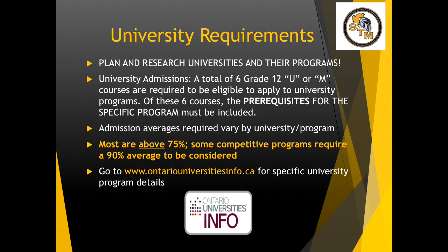Please take the time to plan and research universities and their programs. University admissions require a total of 6 Grade 12 U or M courses which make you eligible to apply. The prerequisites for the specific programs must also be included in your 6 Grade 12 U or M courses. Admission averages required for university programs vary by university and program, but most are above a 75% average. Some very competitive programs require a 90% average just to be considered, with an additional supplemental application. Please go to www.OntarioUniversityInfo.ca for specific university program details.